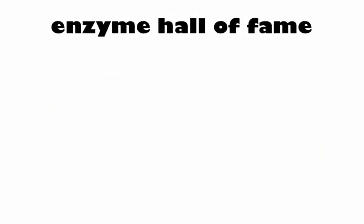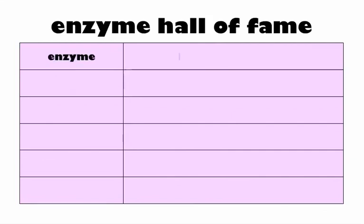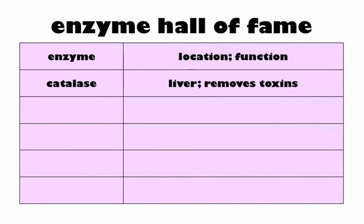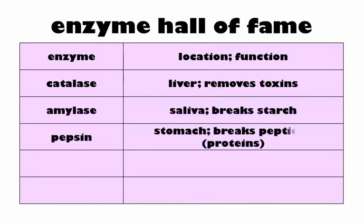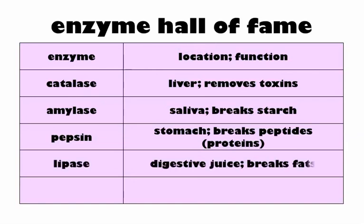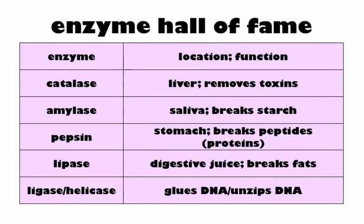Enzyme Hall of Fame: catalase is in your liver and removes toxins; amylase is in your saliva and breaks down starch; pepsin is in your stomach and breaks down peptides — use pepsin on the test, not protease; lipase breaks up fats and is in digestive juice. Ligase is the DNA glue, and helicase is the enzyme that unzips DNA.